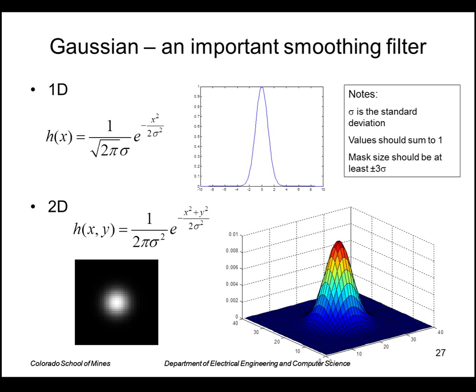When you implement this digitally, of course you can't go to infinity so you have to cut it off somewhere, and you should cut it off at a point where the values are pretty close to zero. That's generally about three sigma out from the center. When you do that, the normalizing coefficient won't be quite accurate. So just to make sure that the values sum to one, you should just sum all your values and then divide by that sum.